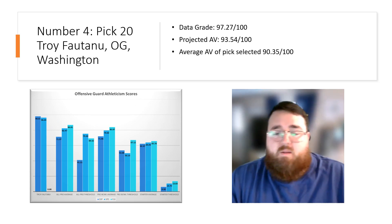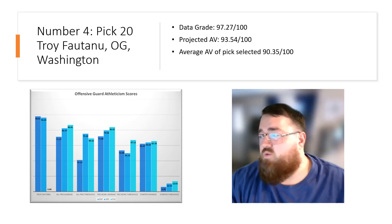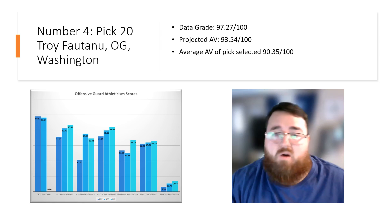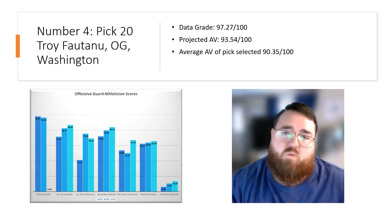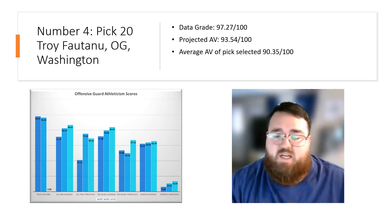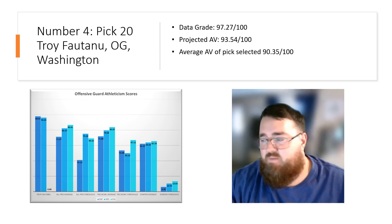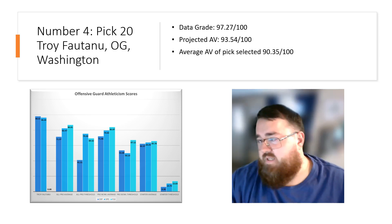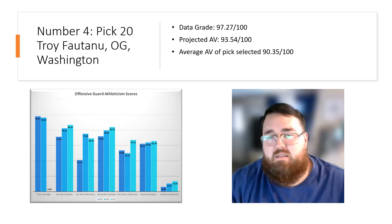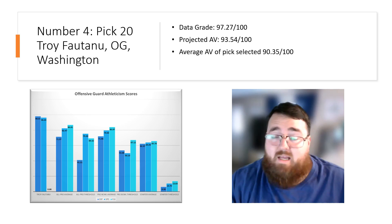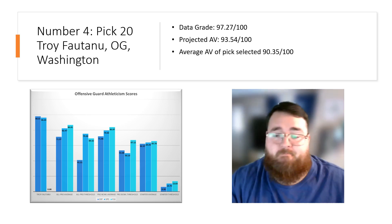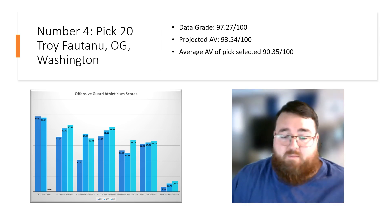Number four: pick 20, Troy Fautanu, offensive guard from Washington. His data grade was 97.27 out of 100, projected AV is 93.54, and average AV of the pick selected is 90.35 out of 100. Very impressive athleticism traits. They got a top-10 guard based on data at pick 20 — that's really impressive.